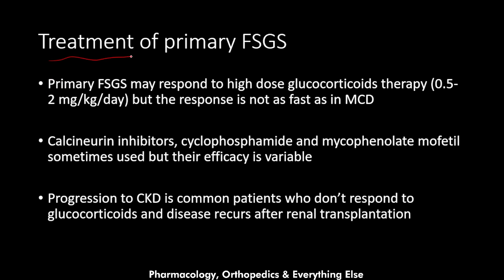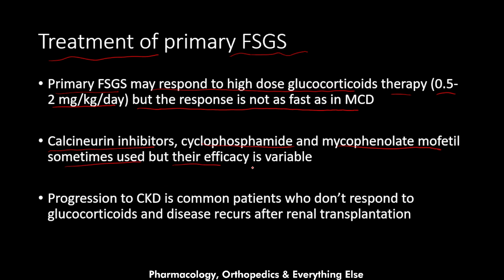Treatment of primary FSGS may involve high-dose glucocorticoids at 0.5 to 2 mg/kg/day, though response is slower than in MCD due to greater steroid resistance. Calcineurin inhibitors like tacrolimus, cyclophosphamide, and mycophenolate mofetil are sometimes used, but efficacy is variable. Progression to chronic kidney disease is common in non-responders, and disease recurs after renal transplantation.